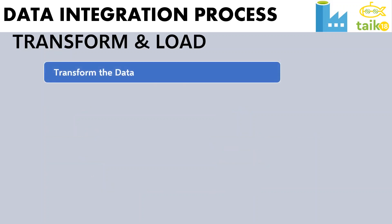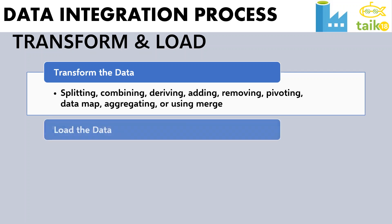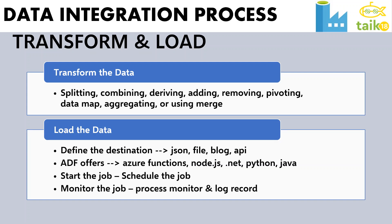When it comes to transform and load: in the transform step, we need to split the data, combine the data, derive the data, add, remove, pivot, map, aggregate, or use lookups on tables. We can use tools like Power Query in the data flow for this process. After that, we load the data — defining the destination, which can be a JSON file, a general file in blob storage, or an API. ADF offers Azure Functions with Node.js, .NET, Python, and Java. Finally, we start or schedule the job, then monitor it and log records for future reference.